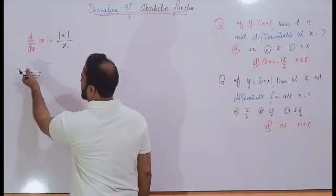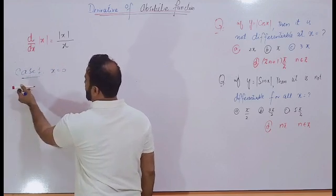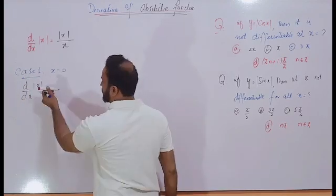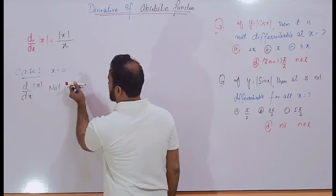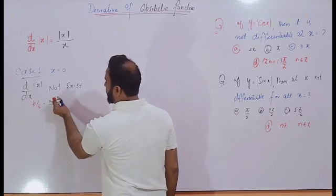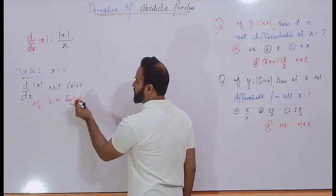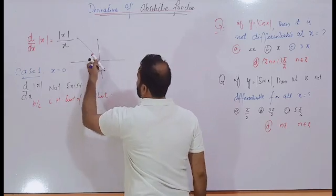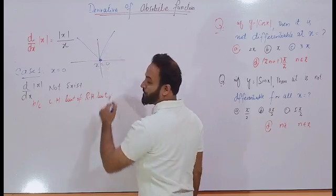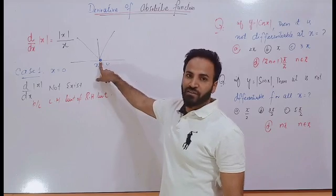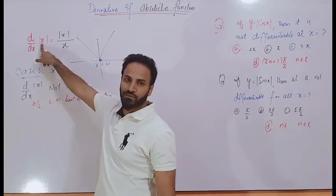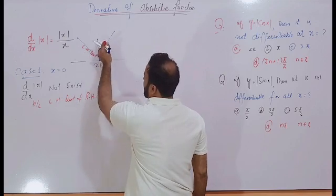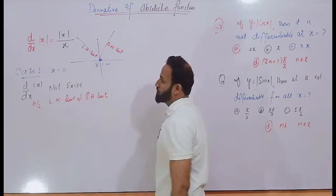Case 1: when x is equal to 0. Remember, students, the derivative of the absolute function at x equal to 0 does not exist, because the left-hand limit does not equal the right-hand limit. At this point, the differentiability of this absolute function does not exist.